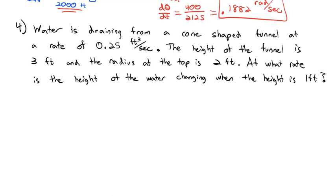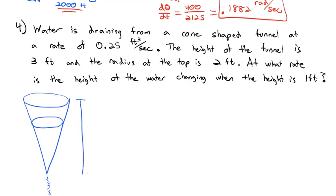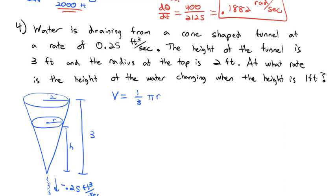Let's draw a picture of our funnel. Here's the funnel with water leaking out — it's not full, so here's the water level. The funnel itself is 3 feet high and the radius is 2 feet. Water is coming out at negative 0.25 cubic feet per second. The radius and height of the water are changing. The volume of a cone is 1/3 π r² times the height.